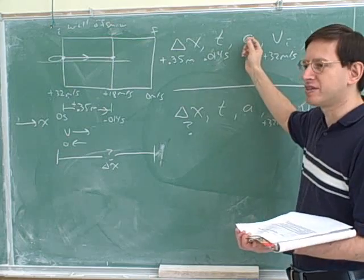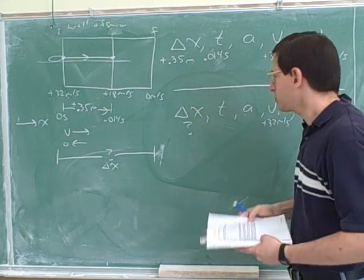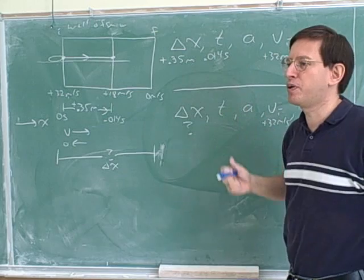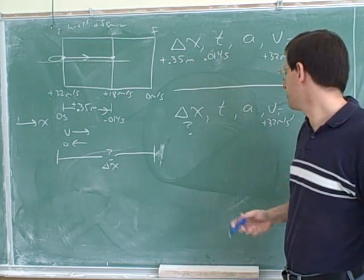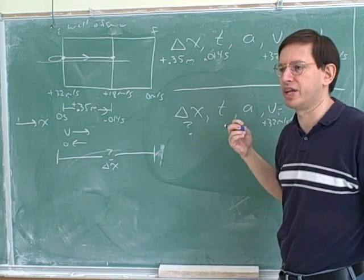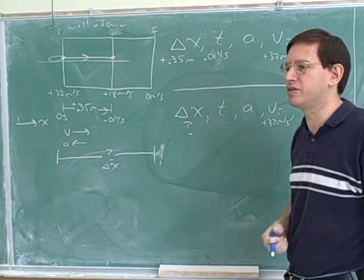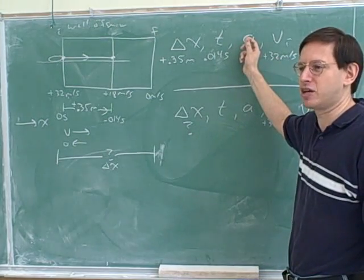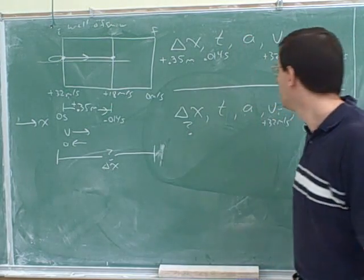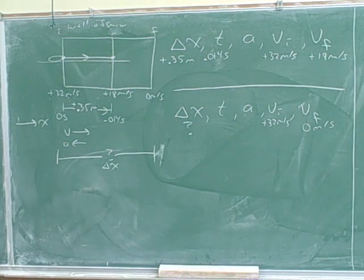So how can we find this acceleration? Well, once you know four variables, you can use pretty much any kinematics equation that you want, whichever one seems most convenient. If you only know three variables, there's only one equation that will work. But if you know four variables, you can use any of the equations. The only equation you don't want to use is the one that's missing acceleration, but you can use any of the equations that have acceleration in them. So let's just pick an equation there and work that out.